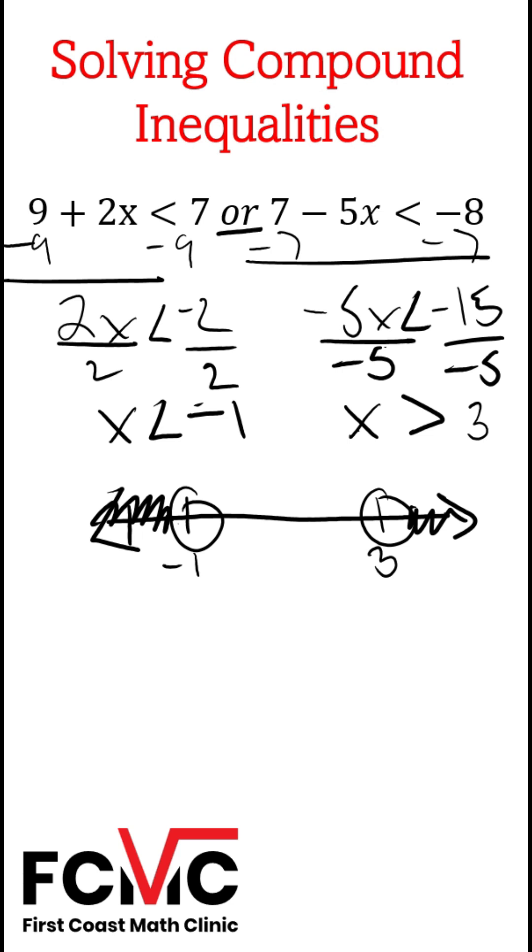I take the value less than negative 1 to check. I'm going to pick negative 2, put that in for x here. 9 plus 2 times negative 2 is less than 7. I get 9 minus 4 is less than 7, and I'll get 5 is less than 7, which is a true statement.